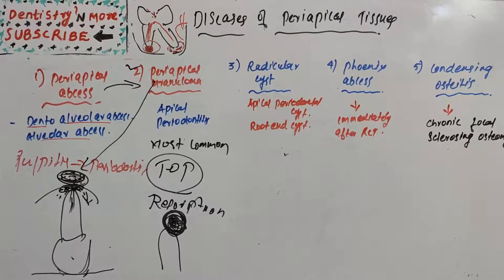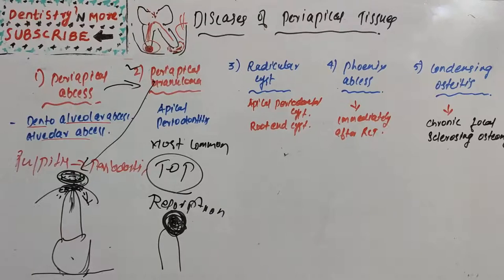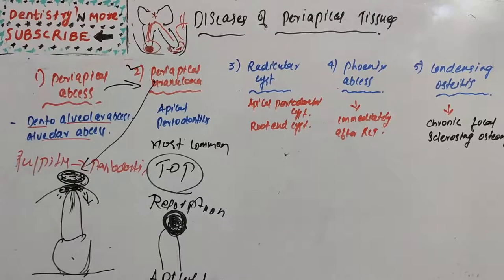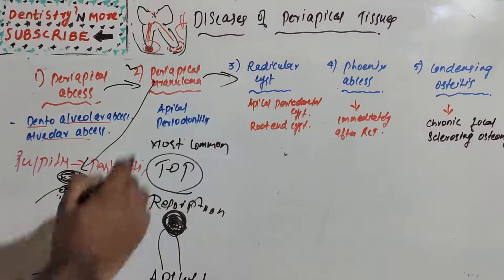There will be proliferation of fibroblasts, formation of tiny vascular channels, and numerous delicate connective tissue fibrils. Treatment is mostly extraction, though root canal therapy with subsequent apicoectomy is also indicated. If periapical granuloma is left untreated, it may undergo transformation into a periapical cyst.